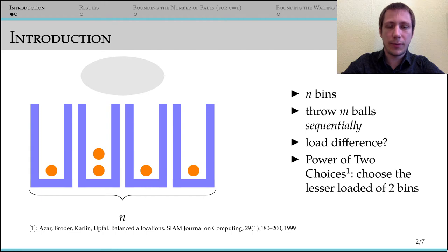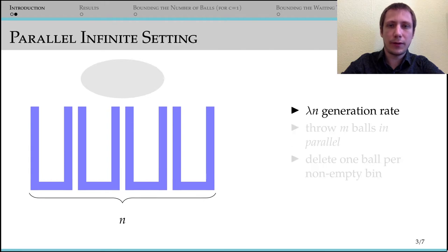Our results apply to the parallel infinite setting, where we create lambda n balls per round and throw all balls we have at once. Then all non-empty bins delete one ball. We repeat these steps forever.